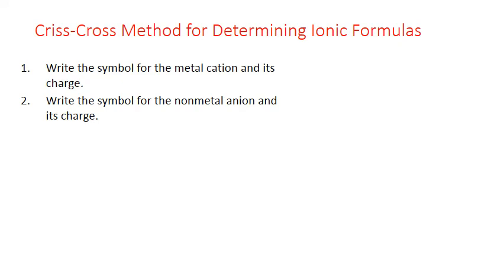We can quickly determine these ratios using the crossover or crisscross method. The first steps are to write the symbol and charge for the cation and anion present. We can predict these charges for the representative elements from the periodic table. For example, for calcium and chlorine: calcium is an alkaline earth metal in column 2, so it always forms cations with a +2 charge, and chlorine is a halogen from column 17 and always forms anions with a −1 charge. In the final formula, I'll need two negatively charged chlorines to balance the +2 charge on calcium.